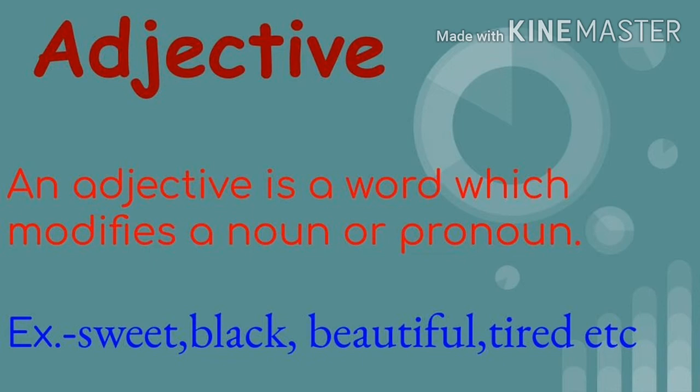Now, adjective. An adjective is a word which modifies a noun or pronoun. For example: sweet, black, beautiful, tired, etc. Besides these examples, there are so many adjectives. What is the work of an adjective in a sentence? It modifies a noun or pronoun — it tells the quality of a noun or pronoun. So the word that modifies a noun or pronoun is called an adjective.